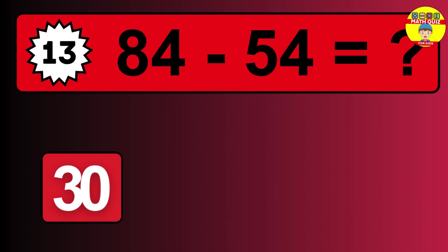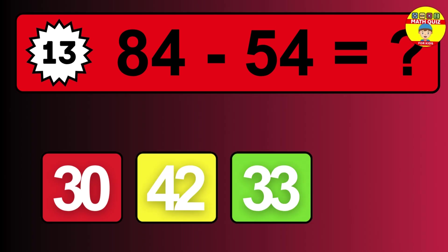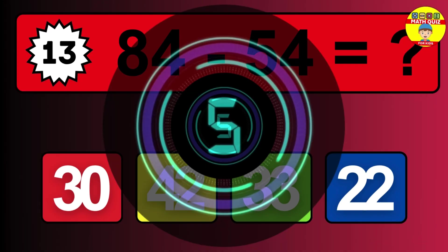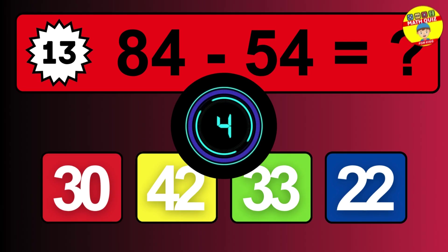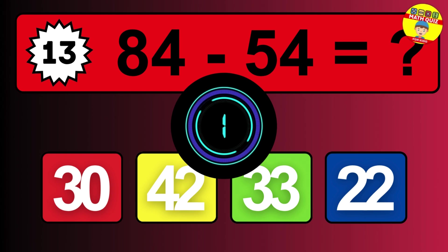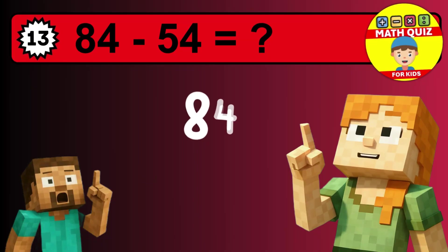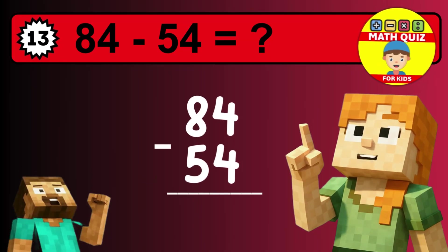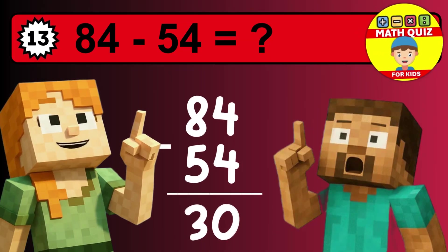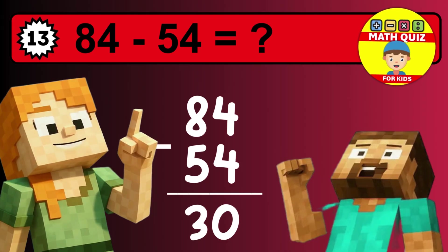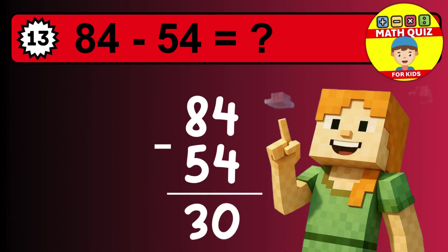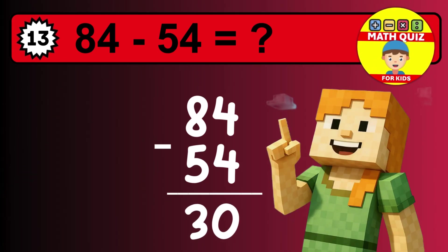What is 84 minus 54? Time to think. Let's solve this step by step. We start with the units: 4 minus 4 is 0. Then we go to the tens: 8 minus 5 is 3. The final answer is 30.